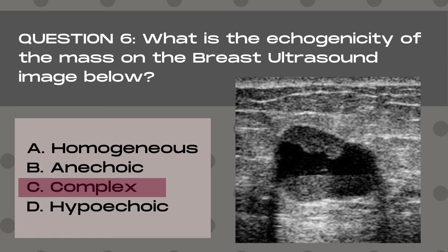On ultrasound, complex has two meanings. It means that a mass has both solid and cystic components, and it also means that a mass displays several different types of brightness levels or echogenicities — such as a mass may have hypoechoic portions, anechoic portions, and even hyperechoic portions, all within the same mass.